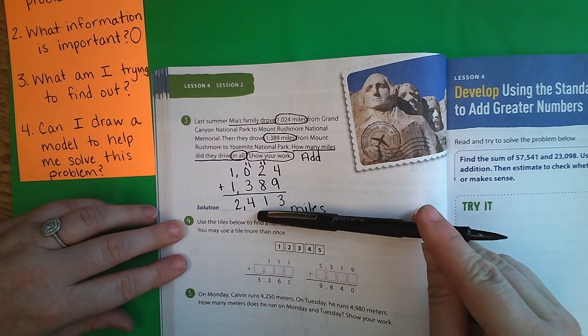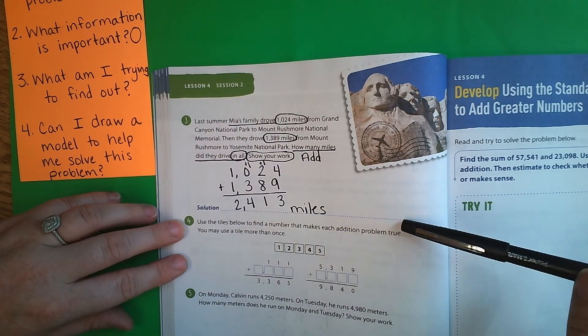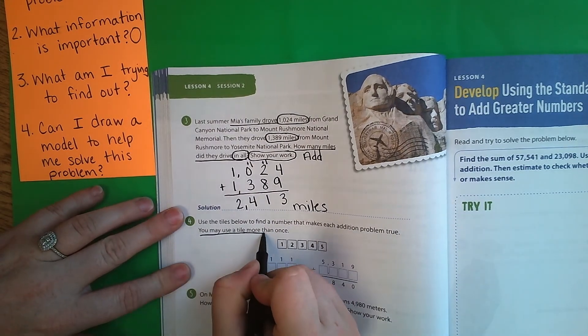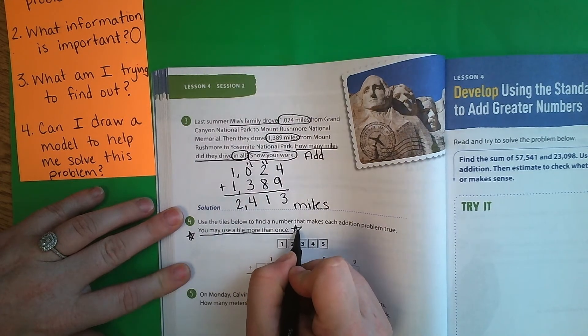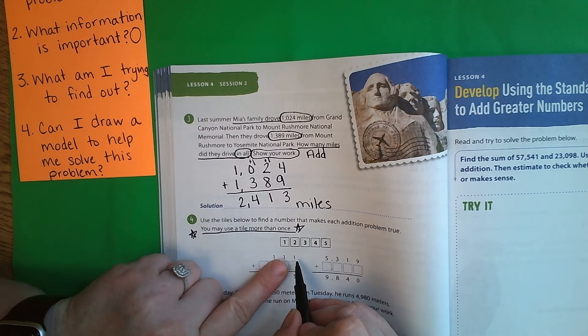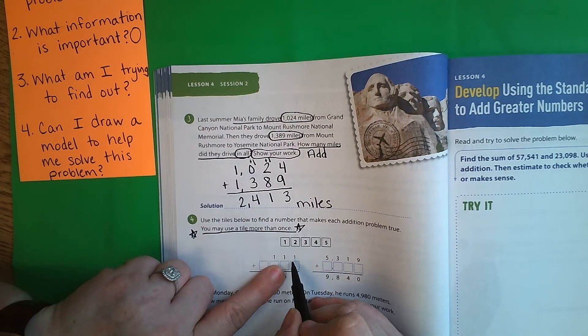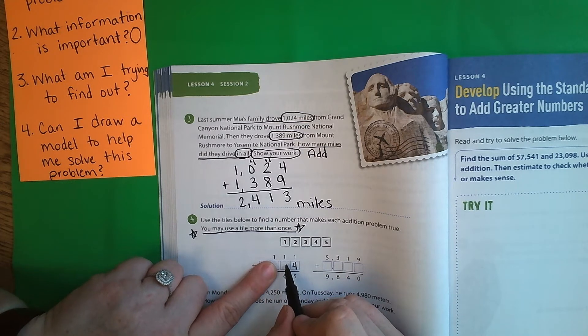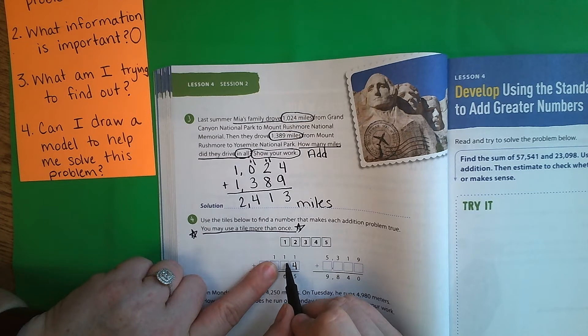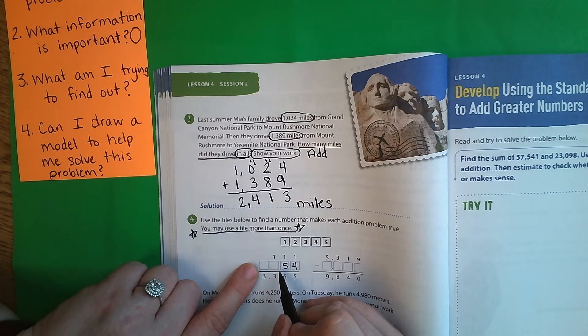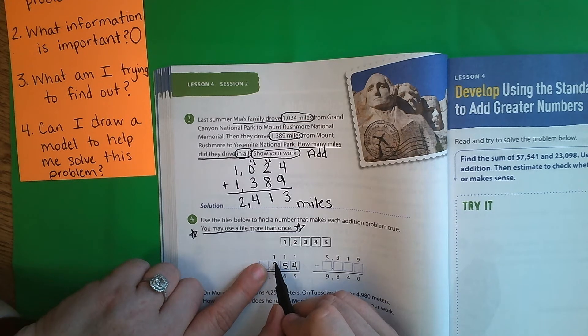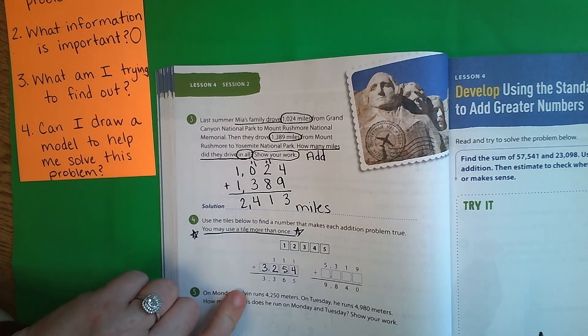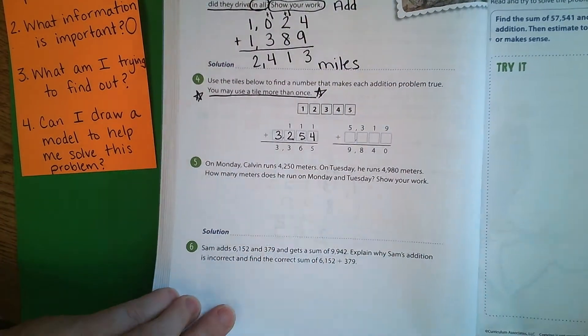Okay. Use the tiles below to find a number that makes each addition problem true. You may use a tile more than once. That's very important for me to remember. So I'm going to put a star by it because I can use them more than once. Okay. So down here. 1 plus what makes 5? Well, that would be 4. Okay. 1 plus what makes 6? Well, that would be 5. 1 plus what makes 3. Well, that would be 2. And what makes 3? 3. So my answer is 3,254 on that first problem.